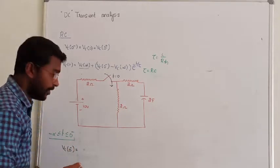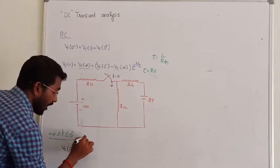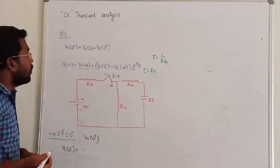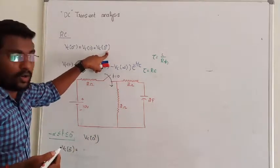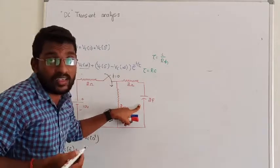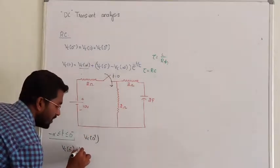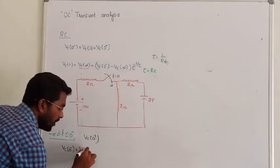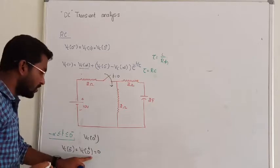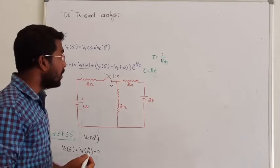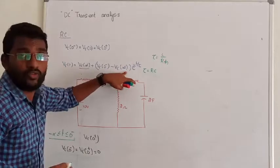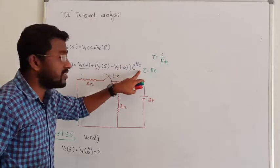So at T = 0⁺, we need to calculate the value of VC(0⁺). But we know that VC(0⁻) and VC(0⁺) are equal. Since the value of VC(0⁻) is 0, the value of VC(0⁺) is also going to be 0. Next, we have to calculate two more parameters: one is VC(∞), and another one is tau.